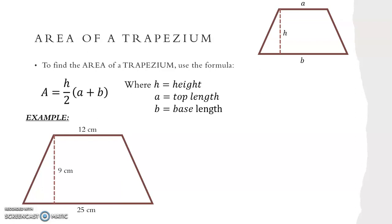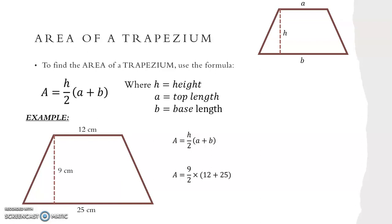For a trapezium, to find the area we use the formula A equals H over 2, bracket A plus B. This is where H equals the height of the trapezium, A equals the top length, and B equals the base length. For our example we write out our formula and substitute in our values: our height is 9 centimetres, our top length A is 12 centimetres, and our base length B is 25 centimetres. So we get A equals 9 over 2 times 12 plus 25. We put this into our calculator to get A equals 166.5 centimetres squared.